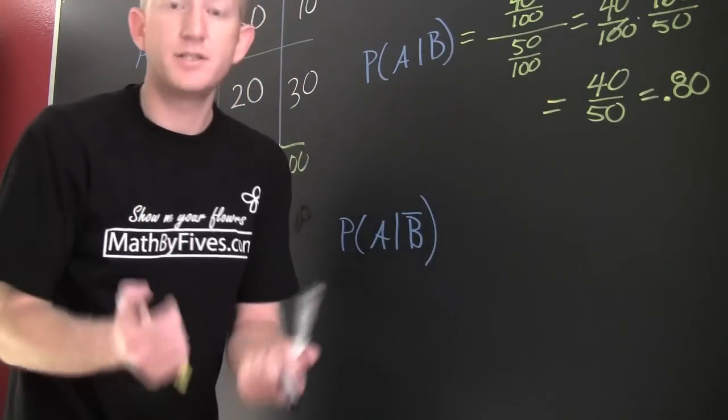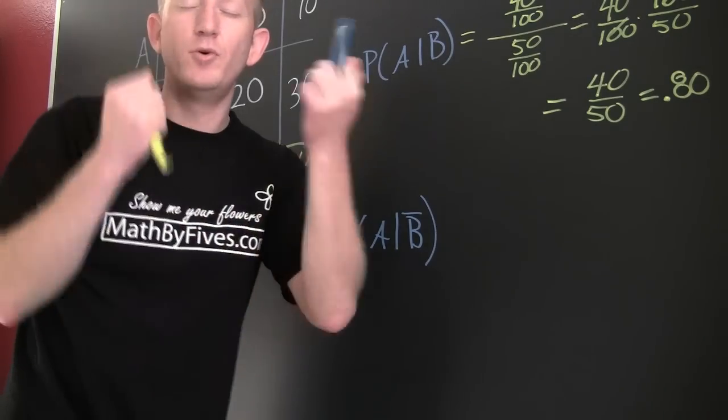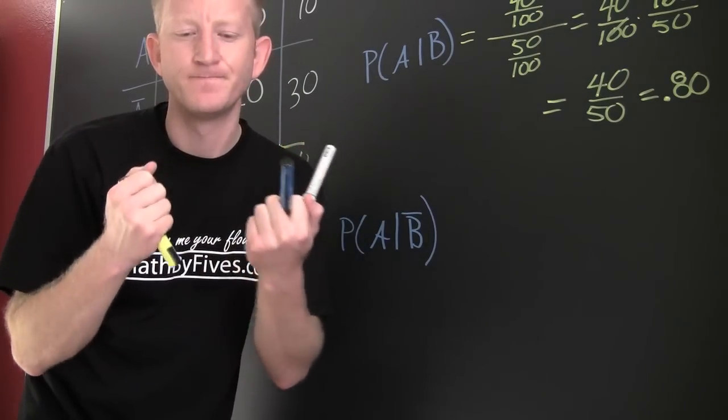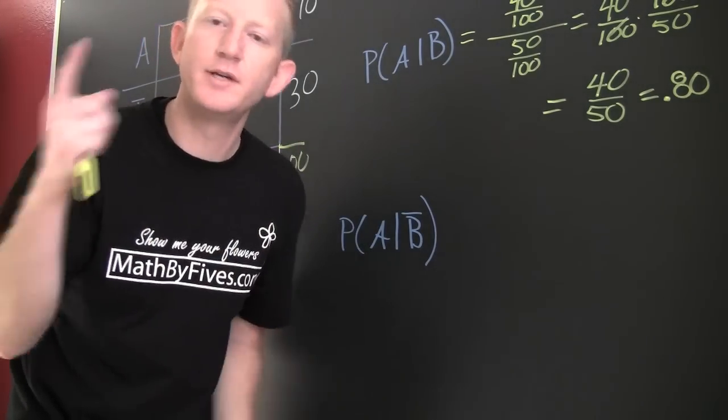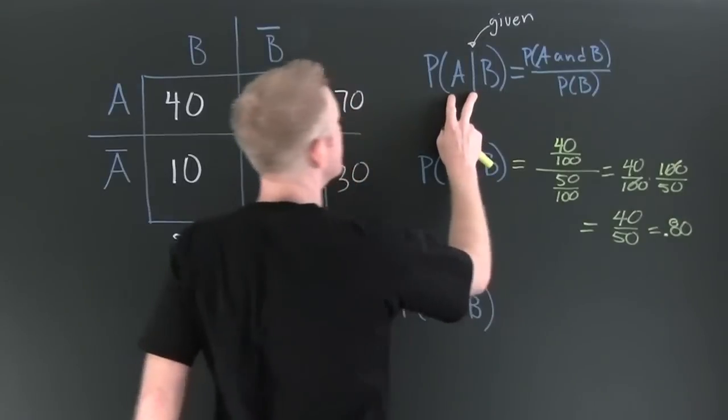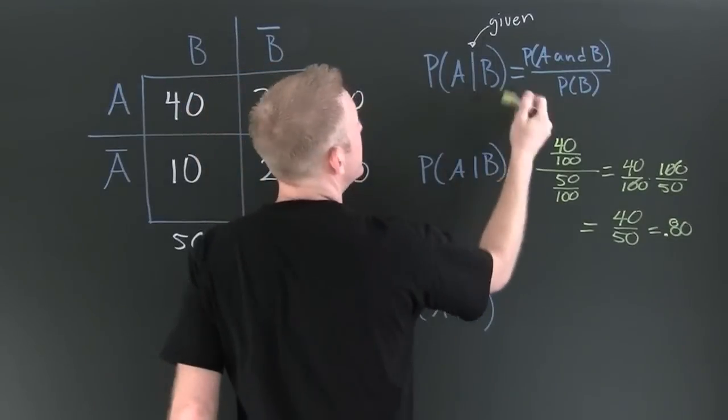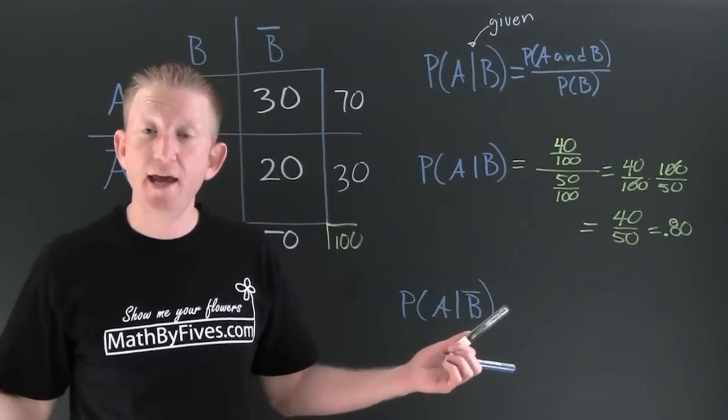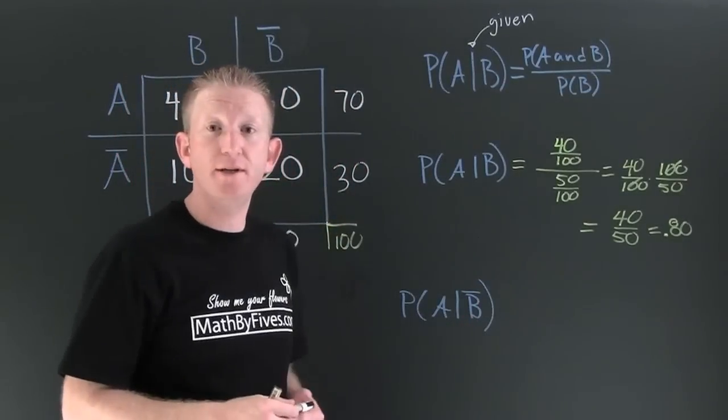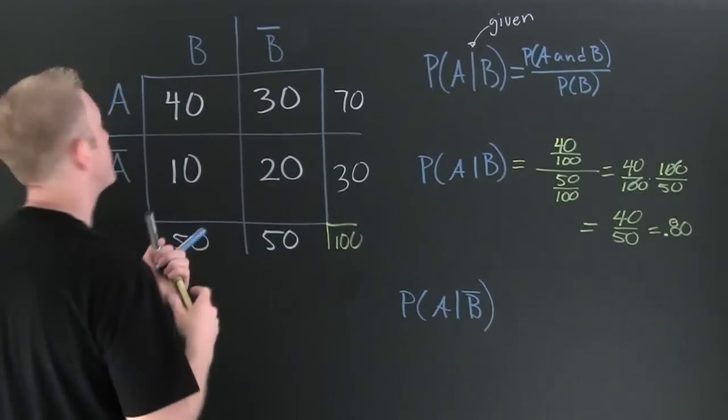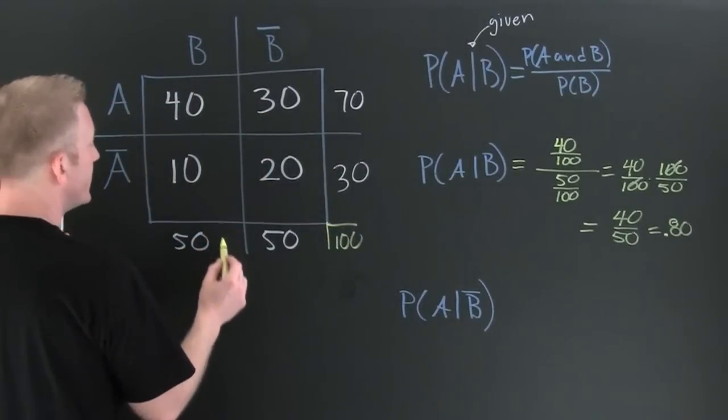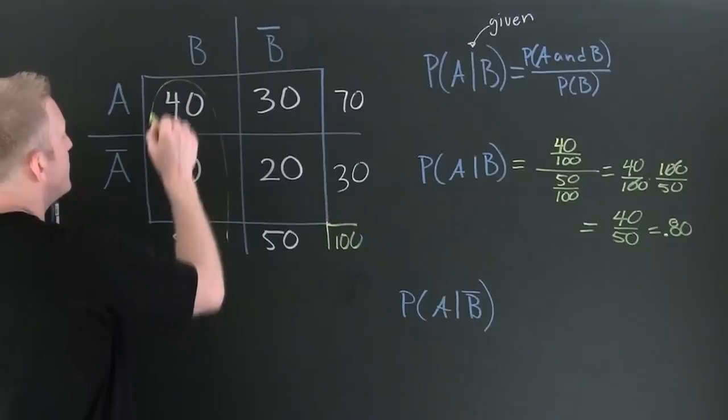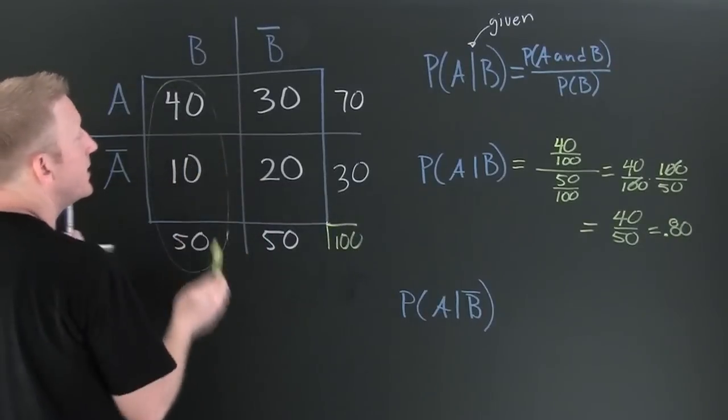We can see these conditional probabilities in a more fundamental approach. This is the probability of A given B. So B has already occurred, and we want to see the chance of A happening when B has already occurred. So we can restrict ourselves to only the B column.